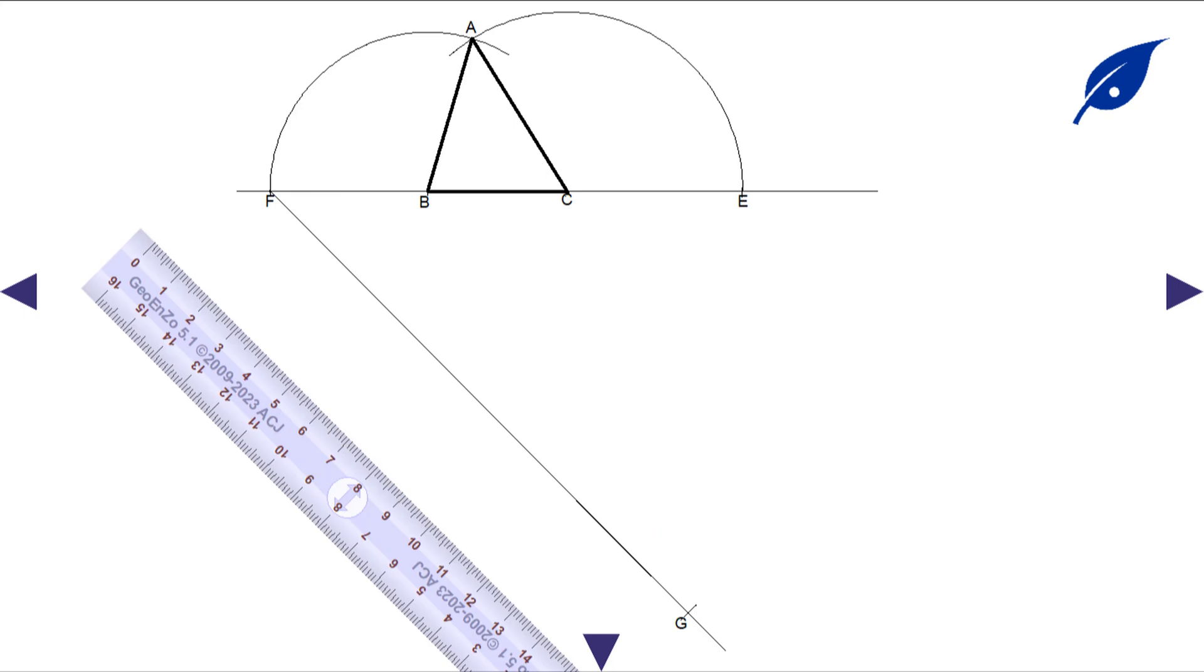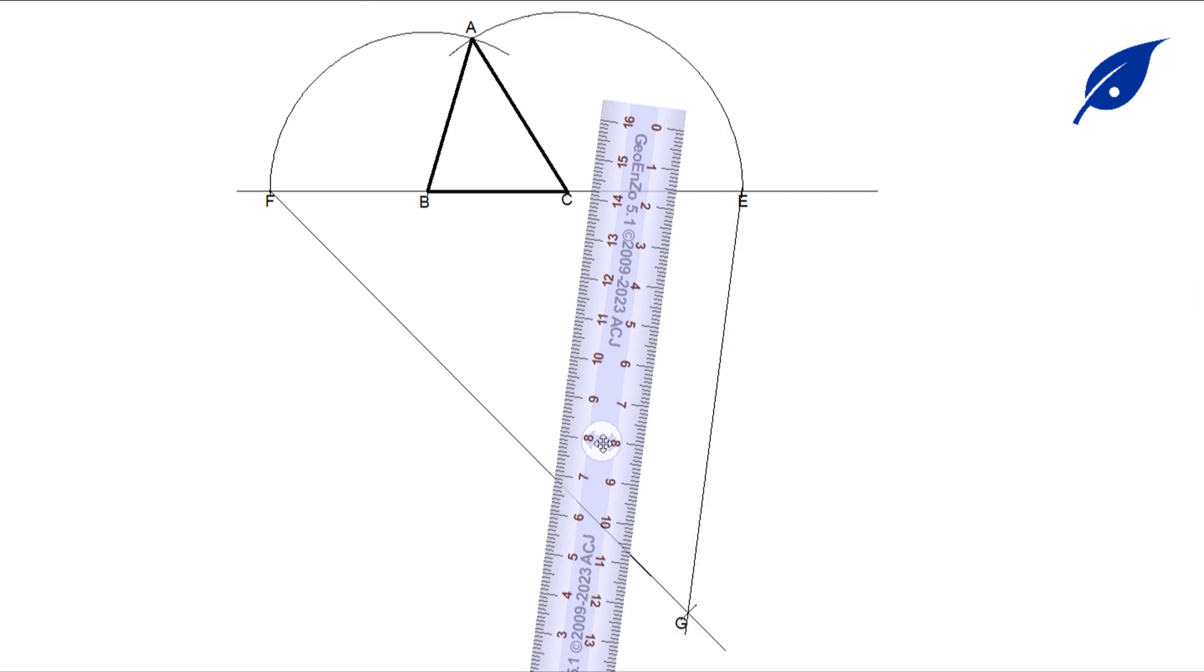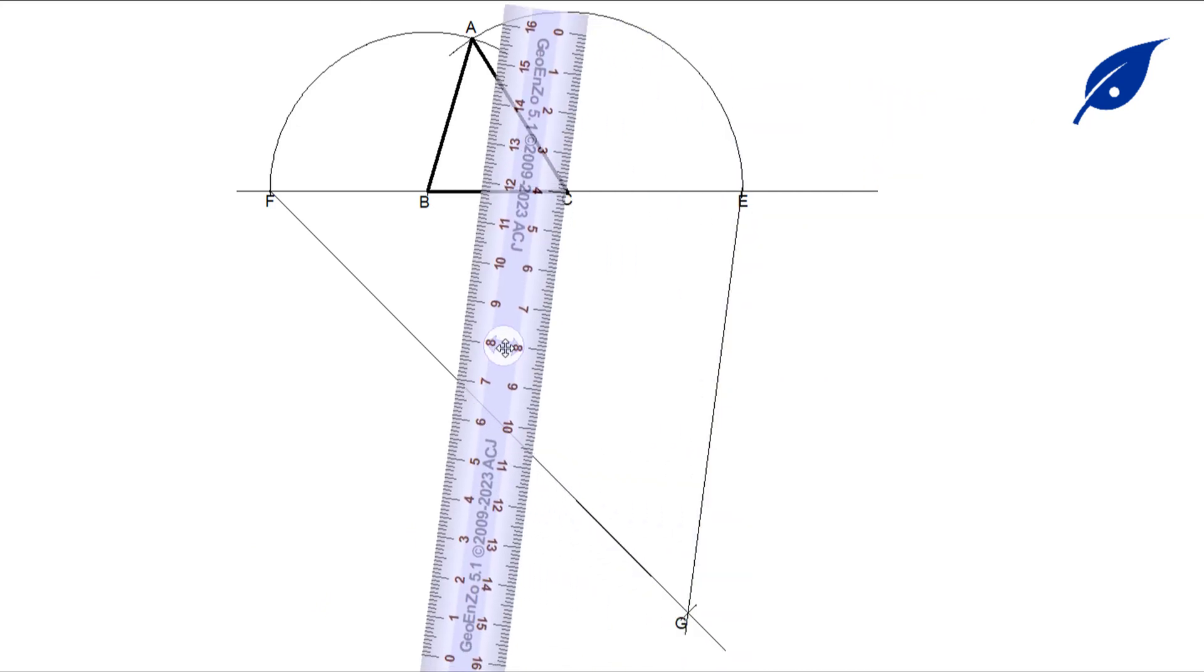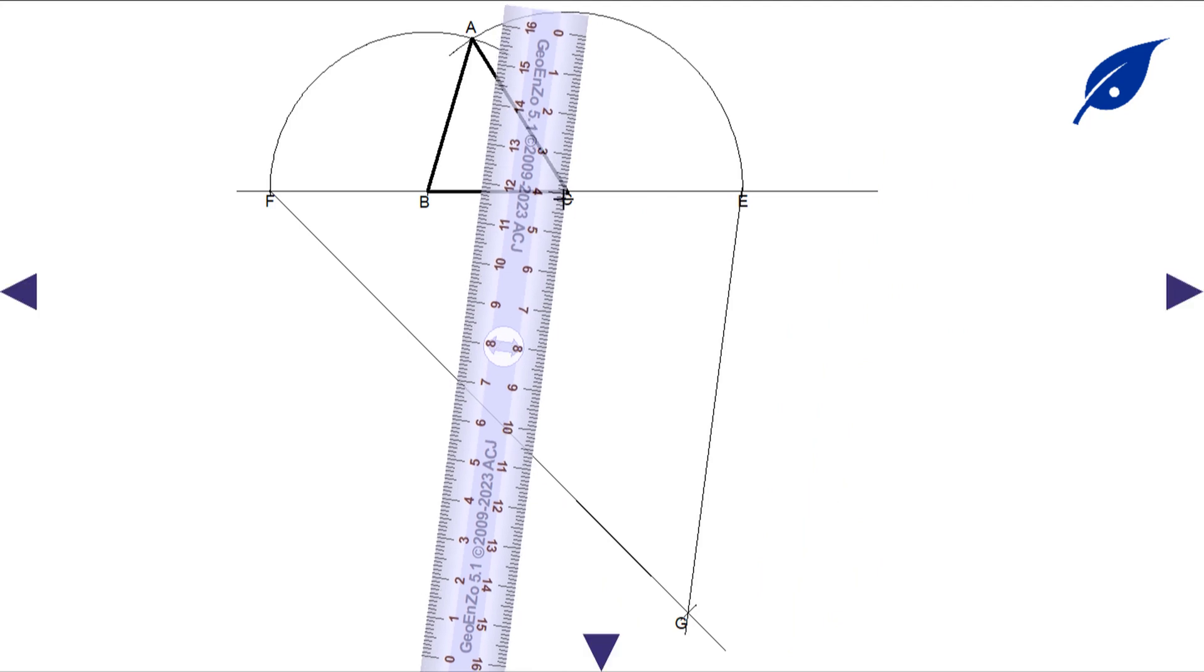This parallel line from C will join the line FG, and from B will join the line FG to get the points H and I. After getting these points, we're going to put the center of our compass at I.